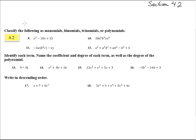Here we are in section 4.2 with problems 9 through 18. Classify as monomial, meaning there's one term; binomial, two terms; trinomial, three terms. Polynomials are the generic term for anything greater than three terms, but they do include those as well.